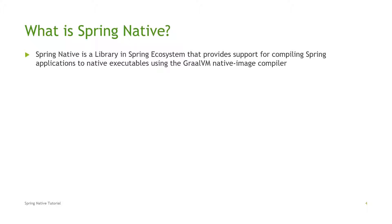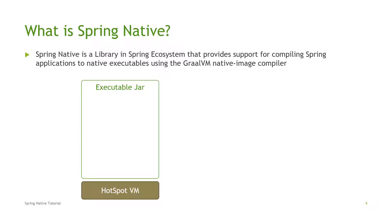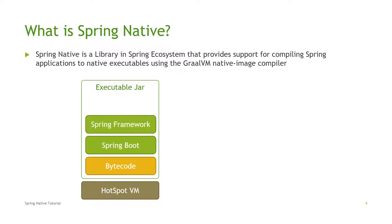Let's have a closer look at what it means. Usually, when we create Java applications, we execute the created code using Java Virtual Machine, called Hotspot VM. Hotspot VM runs our code, which is provided as an executable jar. The executable jar contains bytecode, which is an intermediate pre-compiled representation of our code — Spring Boot code, Spring Framework code, and our application code.